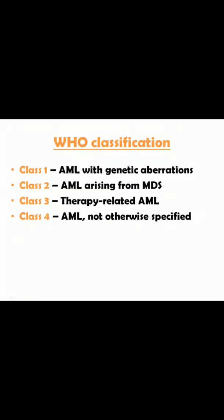Class 1 is AML with genetic aberrations — where an identified genetic aberration has been found, such as translocation of 15-17, inversion 16, etc., which we'll be talking about in a couple of minutes.